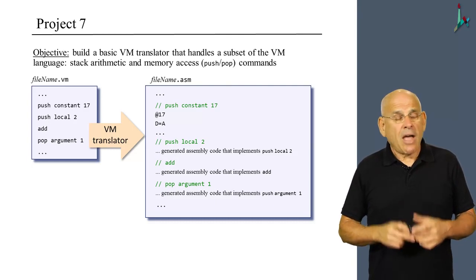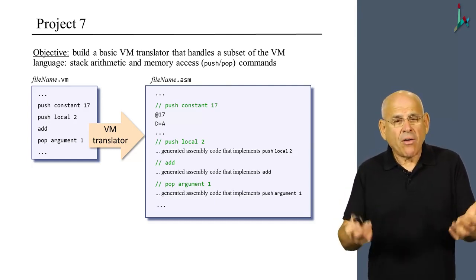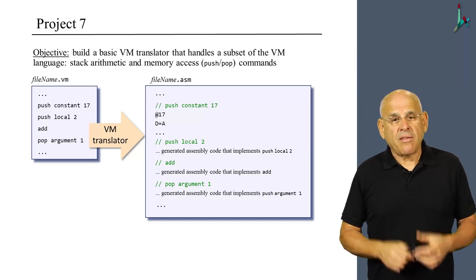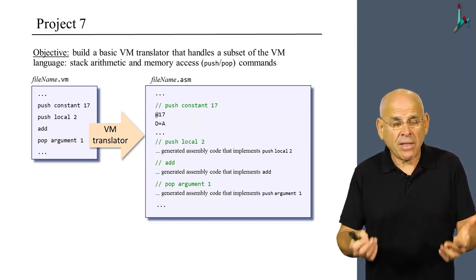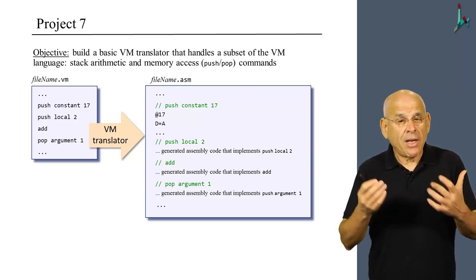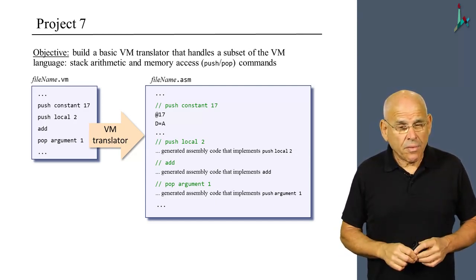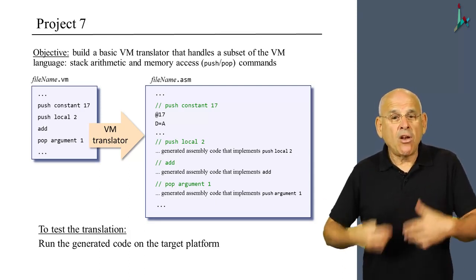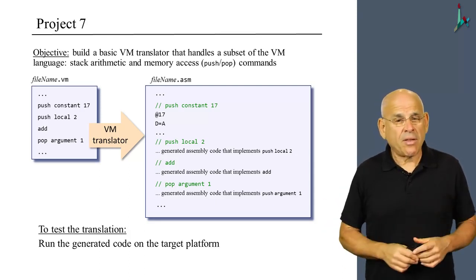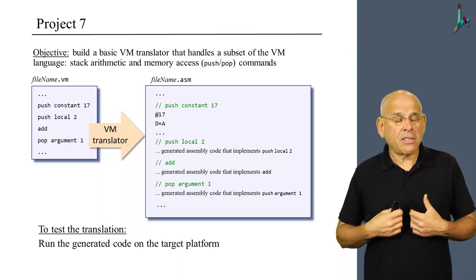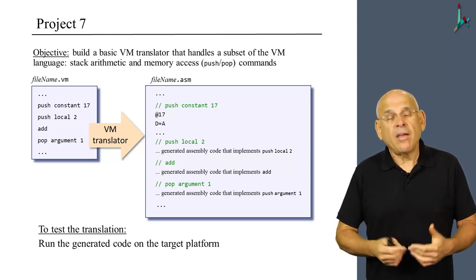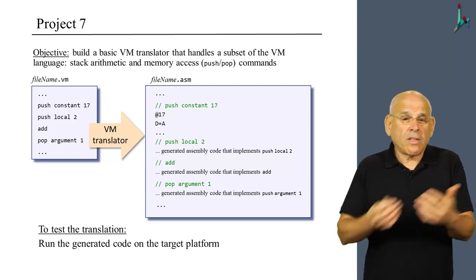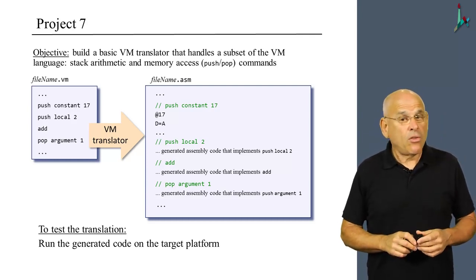The question is how do you test the translation — how can you tell that the VM translator actually generates legible machine level code? Well, you can take the generated code, load it into the target platform — in our case, the Hack computer — run it, and convince yourself that the code is doing what the source code intended to do.